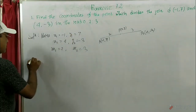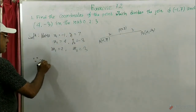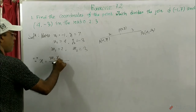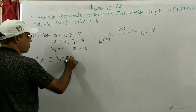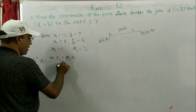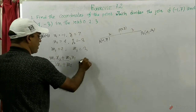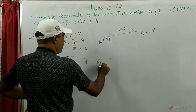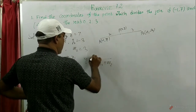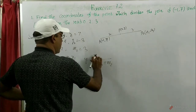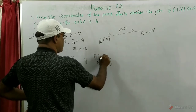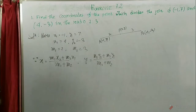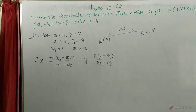Now we know the section formula: x = (m1·x2 + m2·x1) / (m1 + m2) and y = (m1·y2 + m2·y1) / (m1 + m2). This is the main formula of the section formula.